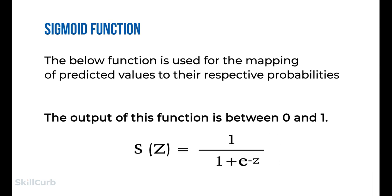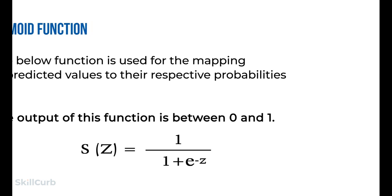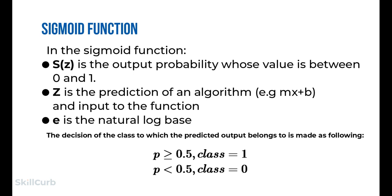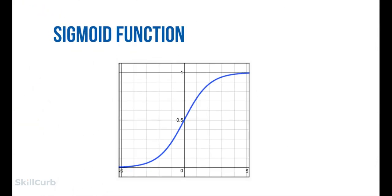In order to map predicted values to probabilities, we use the sigmoid function, which maps any real value to a number between 0 and 1. We expect classifiers to give outputs based on probability when passing inputs through a prediction function. For example, with two classes — apple (1) and oranges (0) — we decide with a threshold value above which we classify as class 1. Using a threshold of 0.5: a prediction of 0.7 would classify the observation as class 1 (apple), and a prediction of 0.2 would classify it as class 2 (oranges).